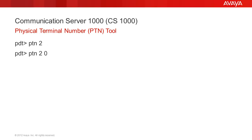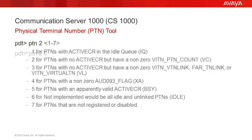To print a summary of all the PTN states, enter PTN space 2 or PTN space 2 space 0. To print all PTNs that match a particular PTN state, enter PTN space 2 space a number between 1 and 7 representing the PTN state you want.